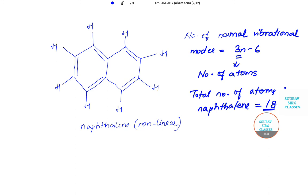So we will substitute this in this formula of number of normal vibration modes. Therefore the answer becomes 3 into 18 minus 6, so this is nothing but 54. 54 minus 6 will give us a value of 48.